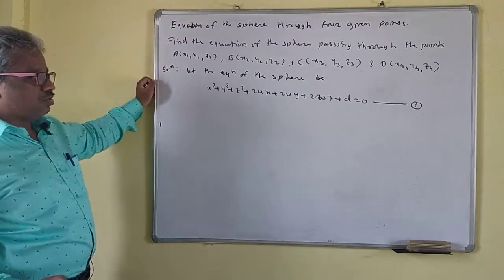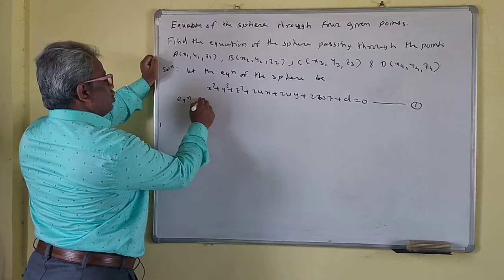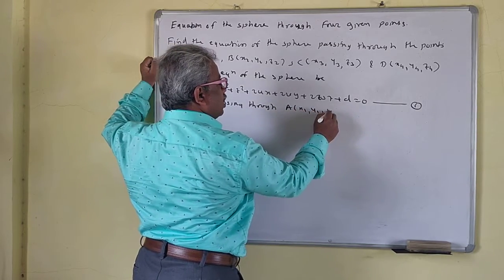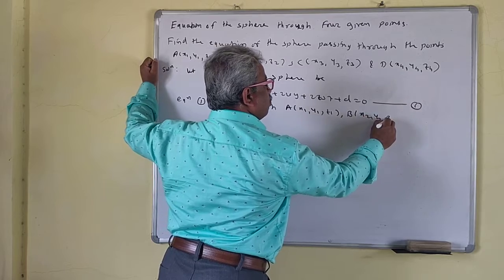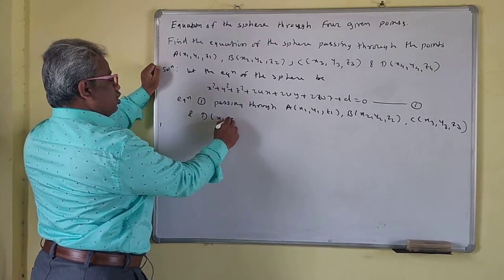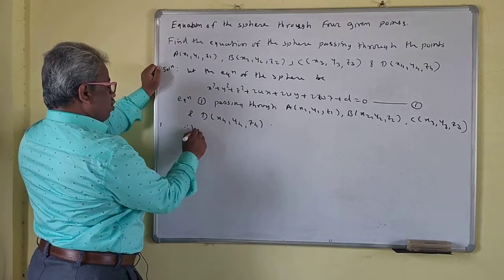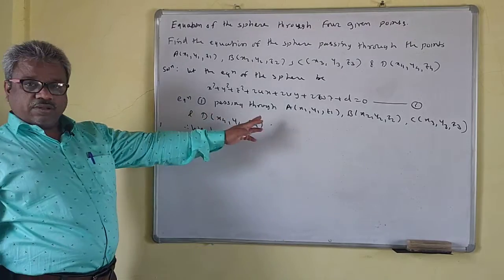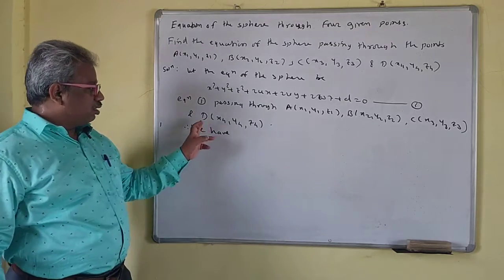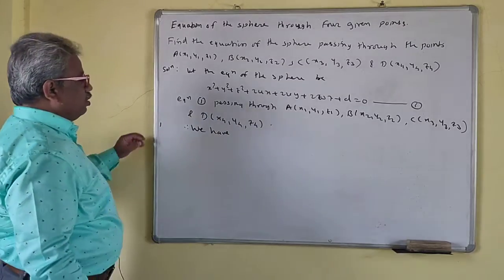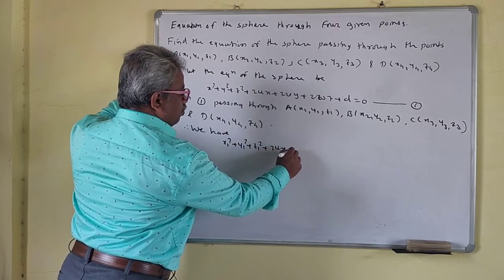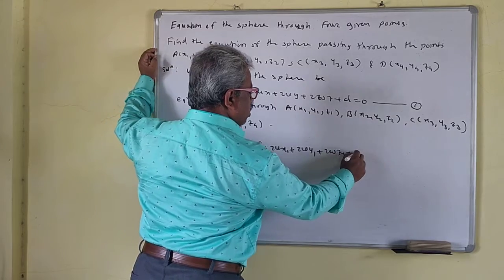Equation 1 is the sphere passing through points A(x₁,y₁,z₁), B(x₂,y₂,z₂), C(x₃,y₃,z₃), and D(x₄,y₄,z₄). Since the sphere passes through these four points, each point satisfies equation 1. So we have: x₁² + y₁² + z₁² + 2ux₁ + 2vy₁ + 2wz₁ + d = 0. We call this equation 2.